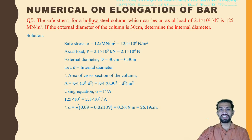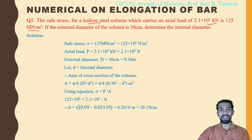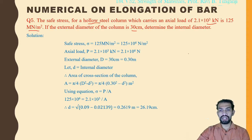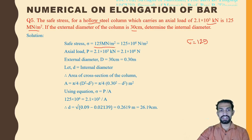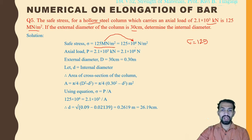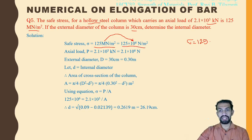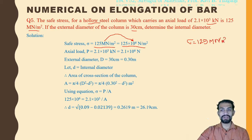The hollow steel column carries an axial load of 2.1 × 10³ kilo Newtons, and the safe stress is 125 mega Newtons per meter square. The external diameter of the column is 30 centimeters — determine the internal diameter. The stress given is 125 MN/m², which when converted is 125 × 10⁶ N/m². Read the question thoroughly and write down all the given values.